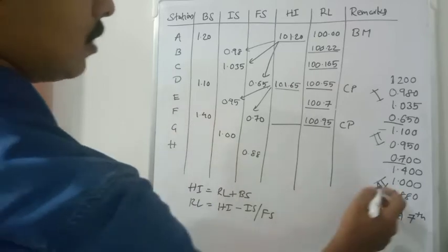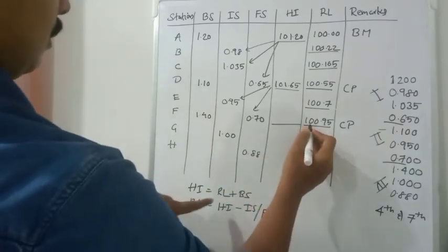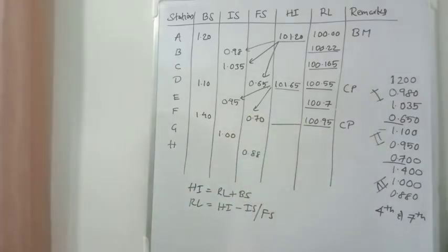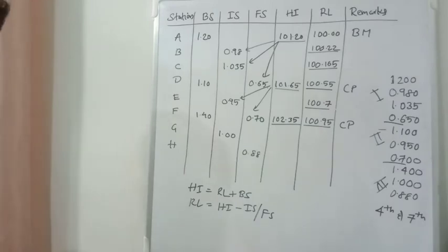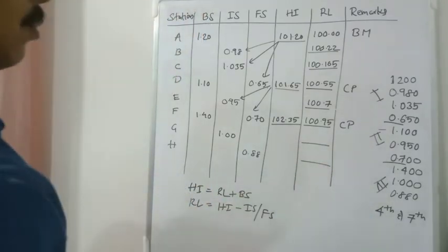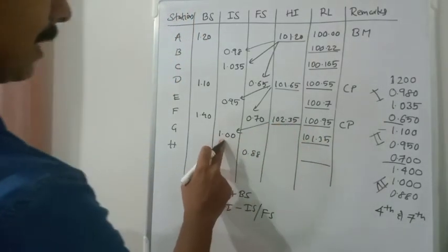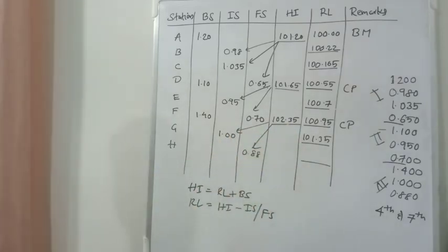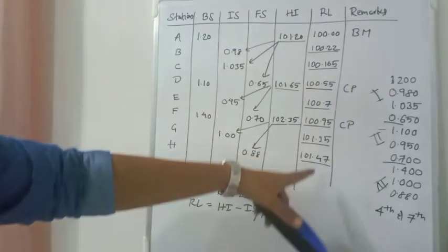For the third instrument setup at station F, we find HI again using RL + BS. HI = 100.95 + 1.40 = 102.35. Then RL of G = 102.35 − 1.0 = 101.35. RL of H = 102.35 − 0.88 = 101.47. So we have found all the remaining reduced levels.